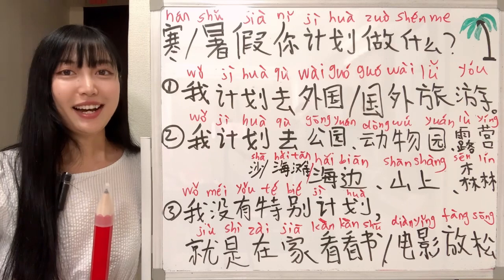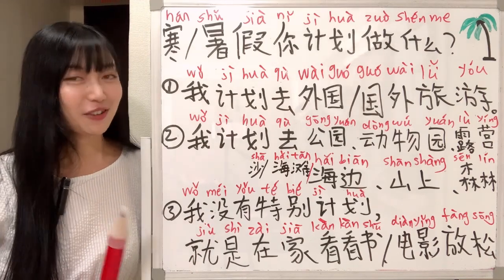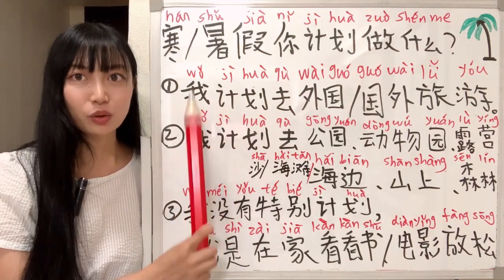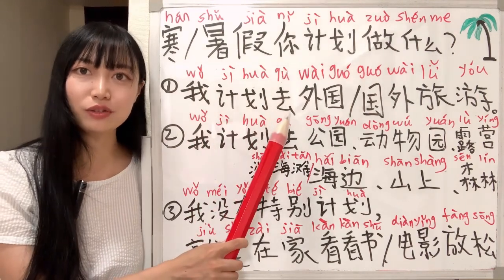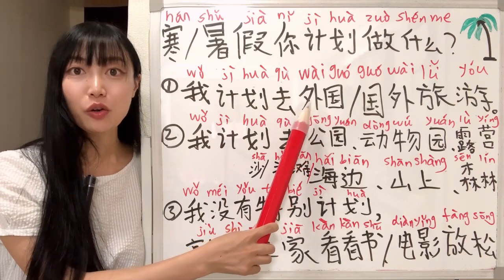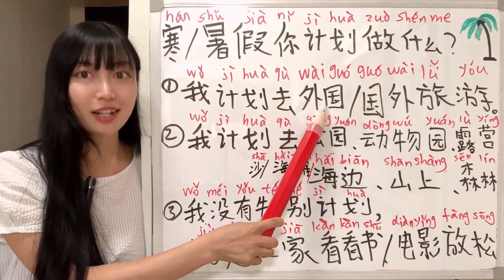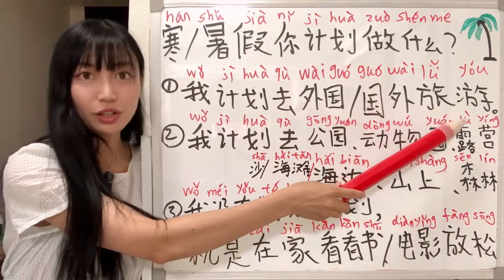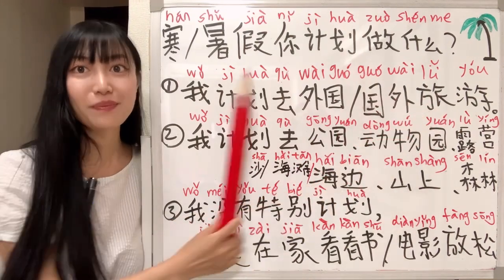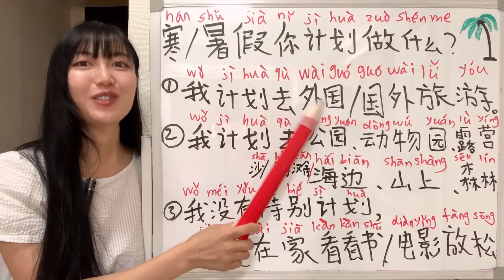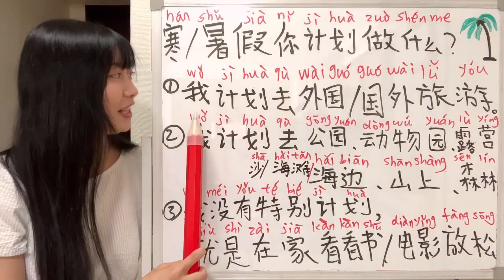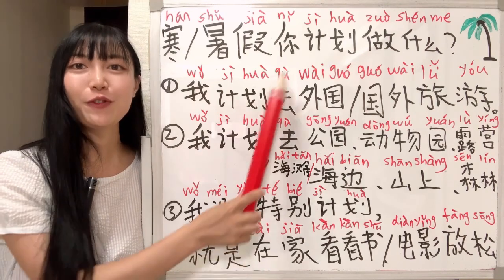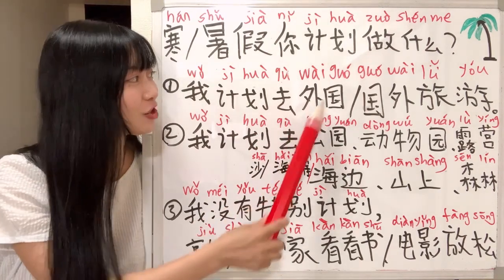So the first way — travel. You can say 我计划去外国旅游. 我计划 means 'I plan', 去 means 'to go', 外国 means 'foreign countries', 旅游 means 'travel'. So: I plan to travel to foreign countries. In Chinese we say: I plan to go to foreign countries for traveling.